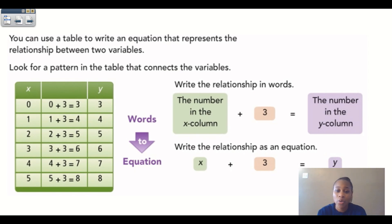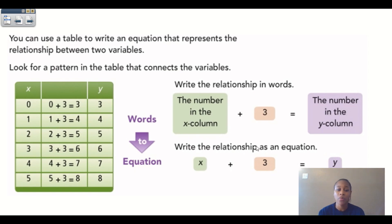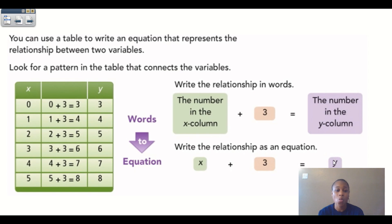Looking at the relationship, we can write the words: the number in the X column plus three equals the number in the Y column. That equal sign is our 'is.' Now we can change that into an equation: X plus three is equal to Y, so our equation is X plus three equals Y.